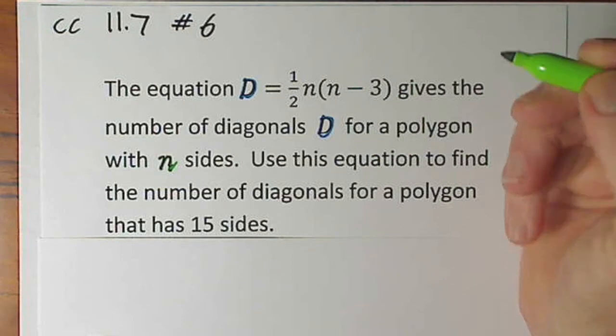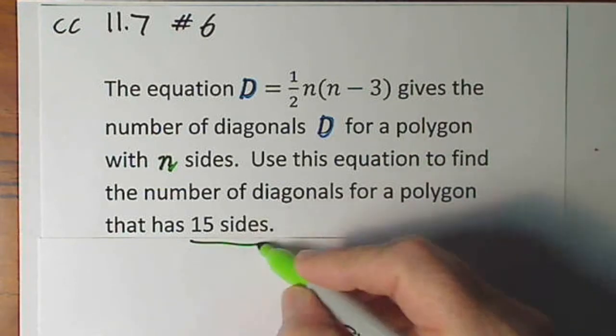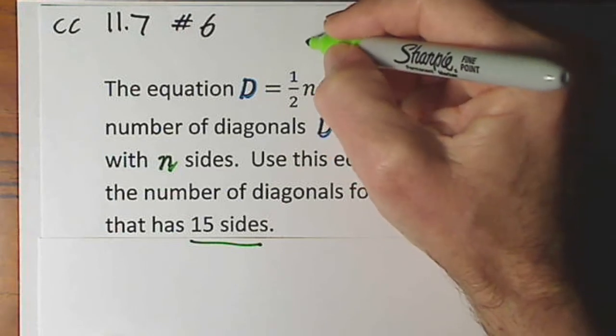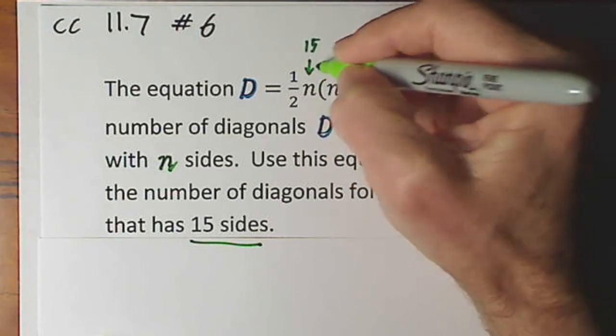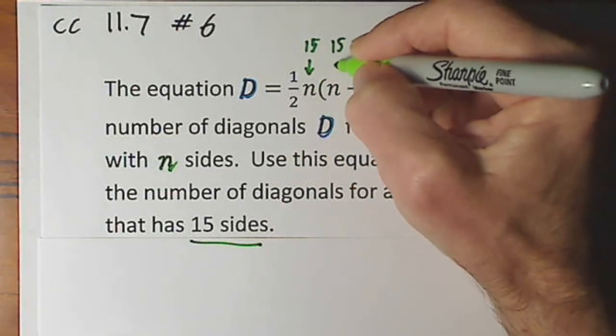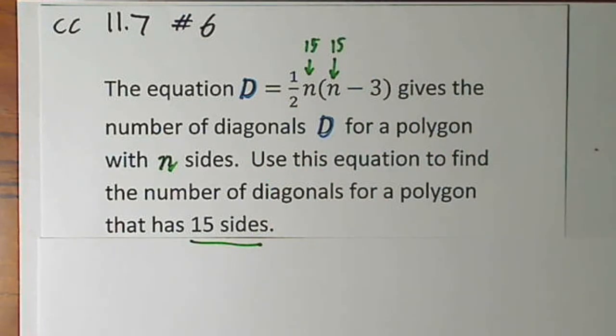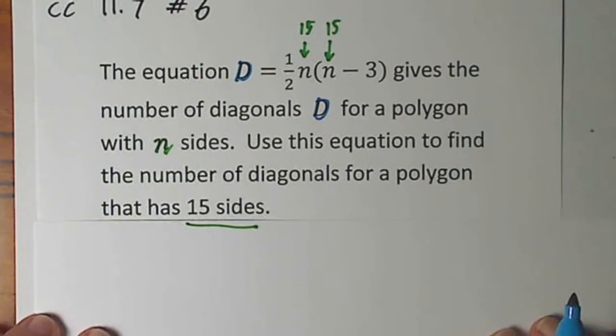Okay, this has 15 sides, so I'm going to plug in a 15 wherever there's an n, and then I'm going to solve for D. All right, so let's see, we have, slide this up just a little.